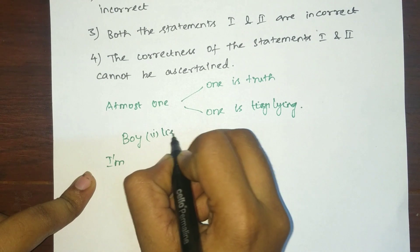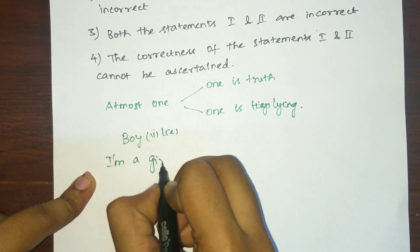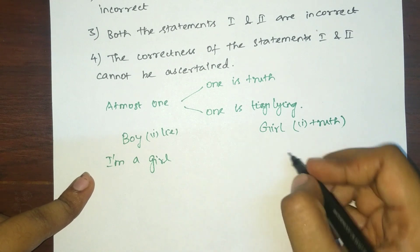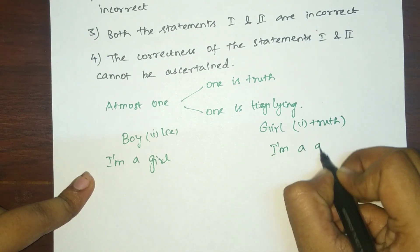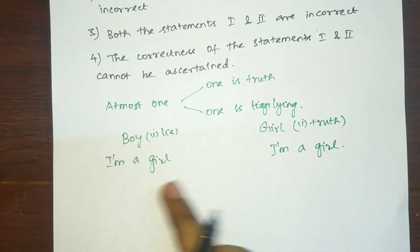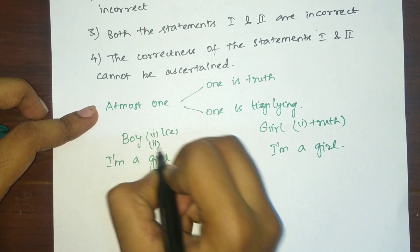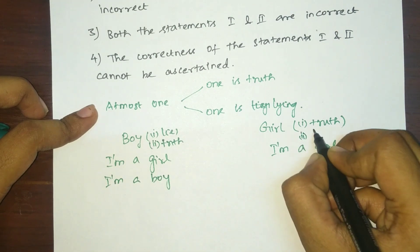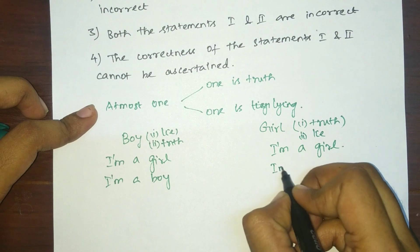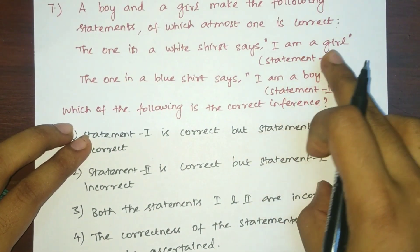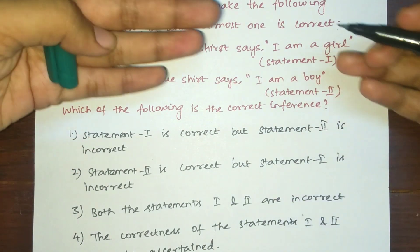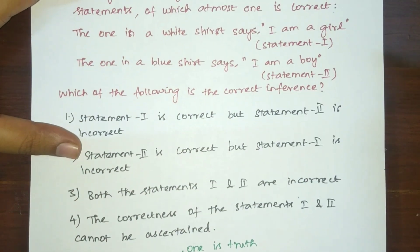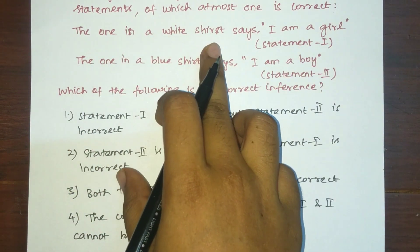Case one: the white-shirt person is lying, so a boy says 'I am a girl.' Since at most one is right, the blue-shirt person must be telling the truth, so a girl says 'I am a girl' — but the statement given is 'I am a boy,' which is a contradiction. Case two: both are lying. The white-shirt person is actually a boy lying by saying 'I am a girl,' and the blue-shirt person is actually a girl lying by saying 'I am a boy.' This is consistent.